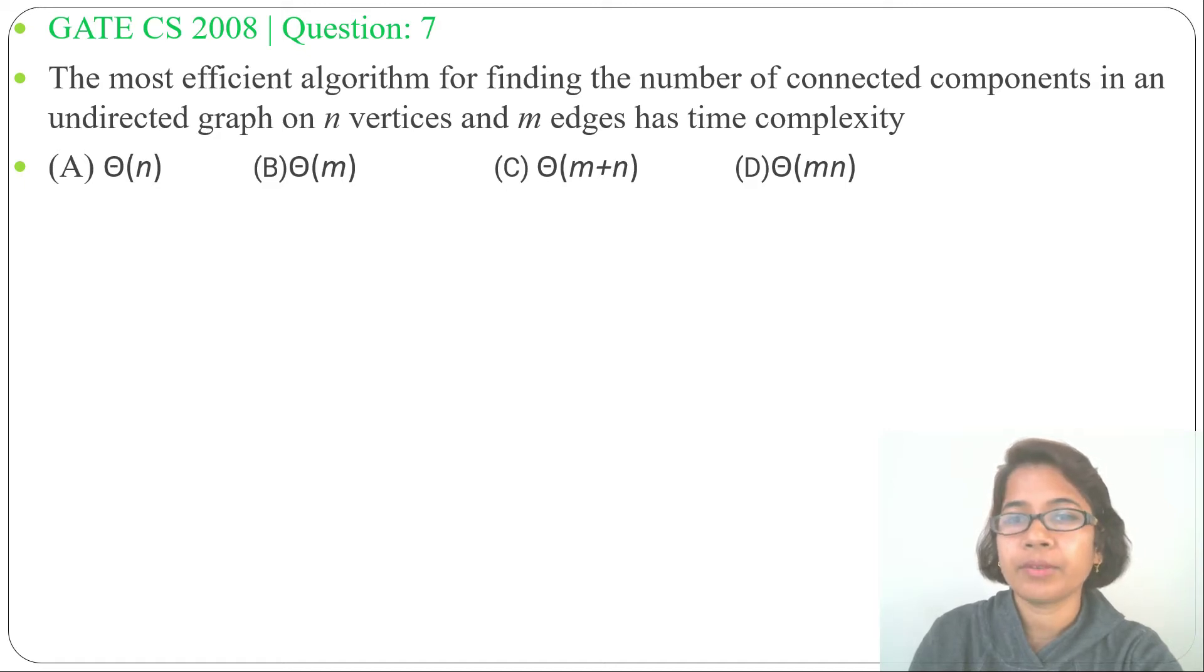Hi, let's solve one previous question of brute force approach. This question was asked in GATE CS 2008, question number seven. The most efficient algorithm for finding the number of connected components in an undirected graph of n vertices and m edges has time complexity. Four options are given. It is asking what will be the time complexity of the most efficient algorithm for finding number of connected components.